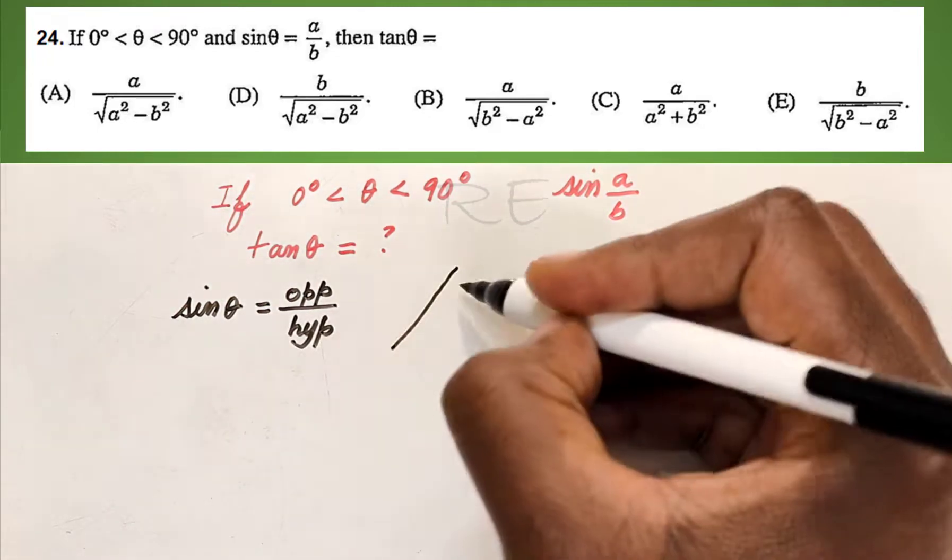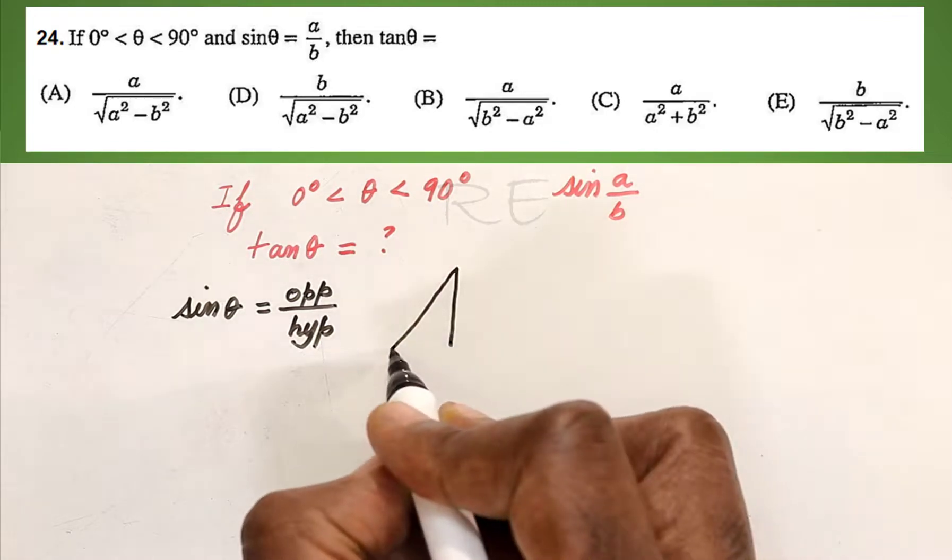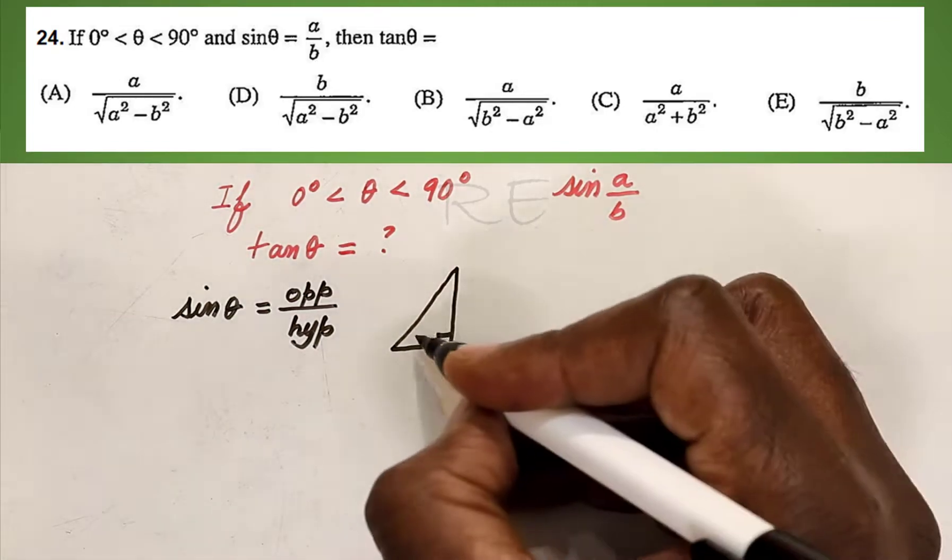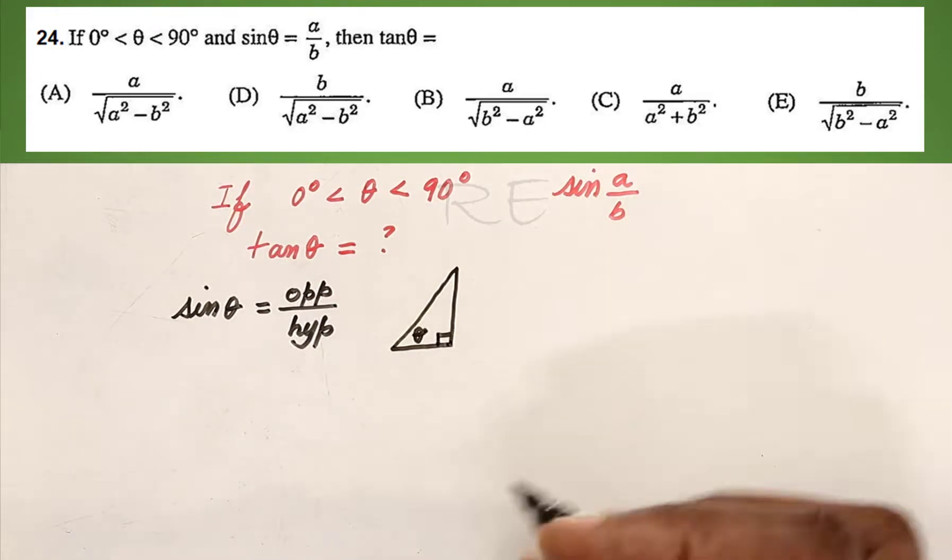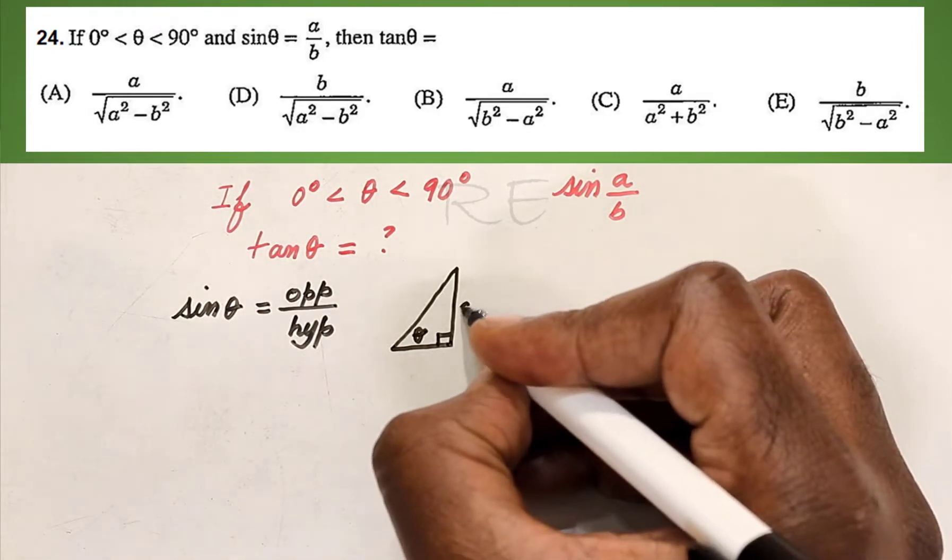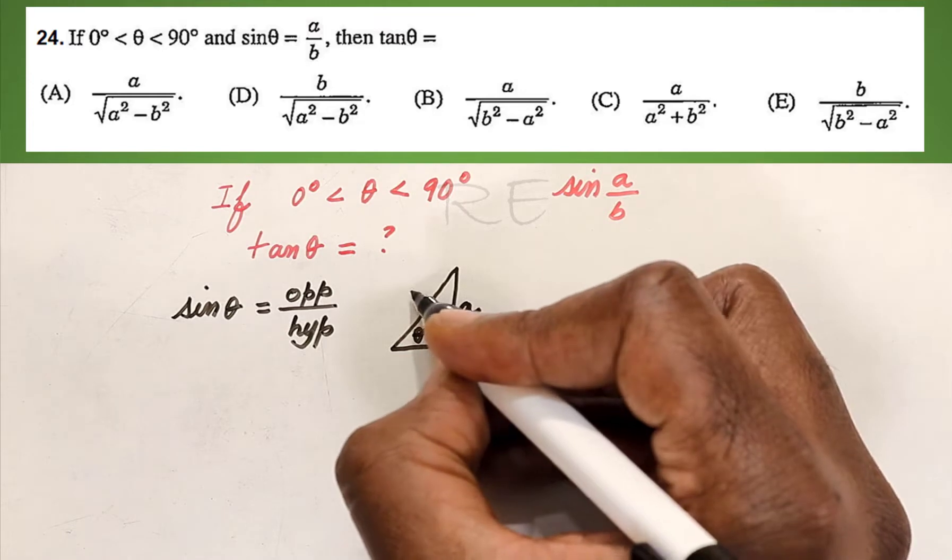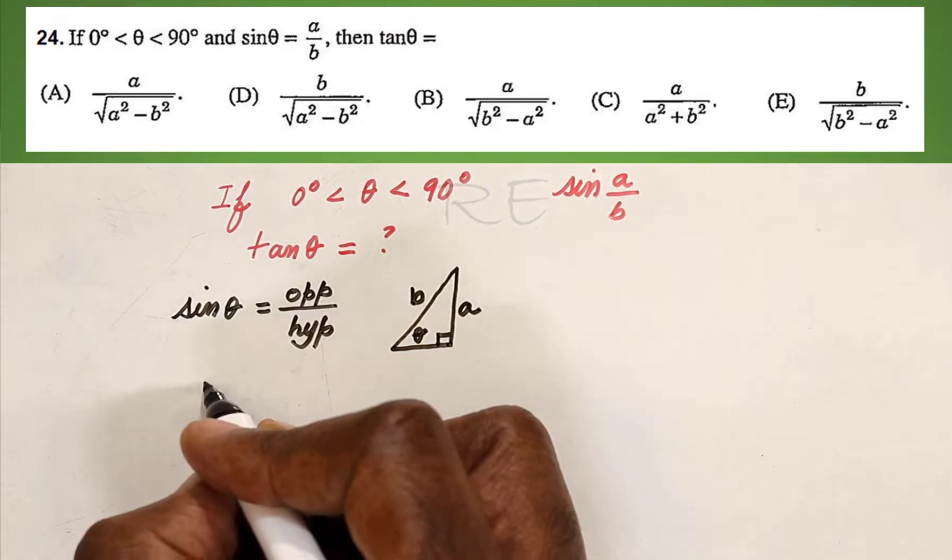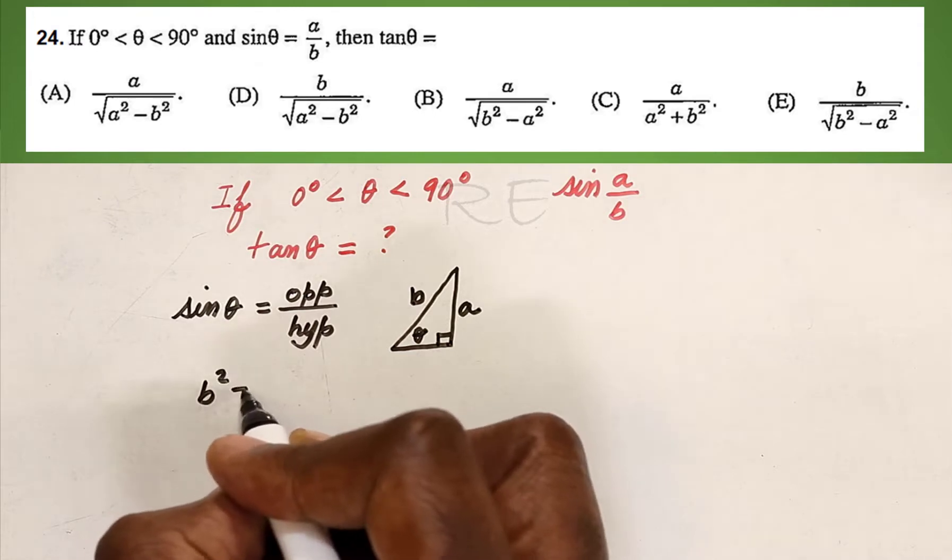Now we're going to create a reference right triangle. And if this is angle theta, sine theta is given. It's the opposite A over the hypotenuse B.